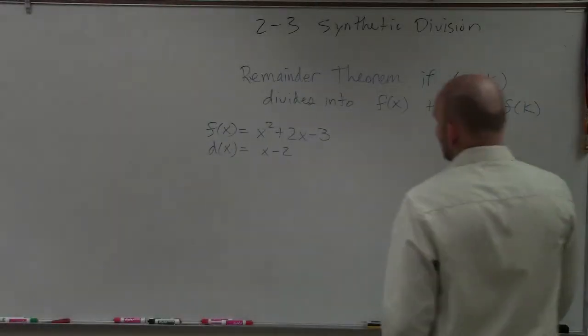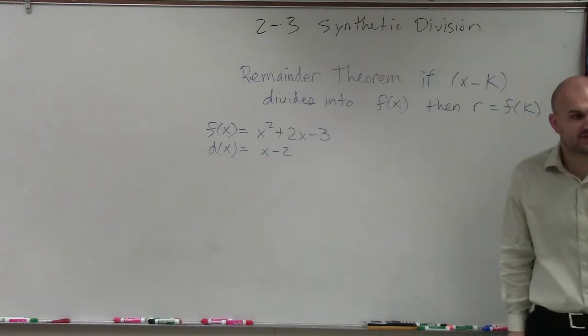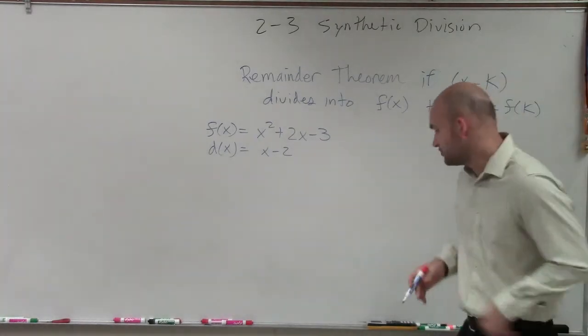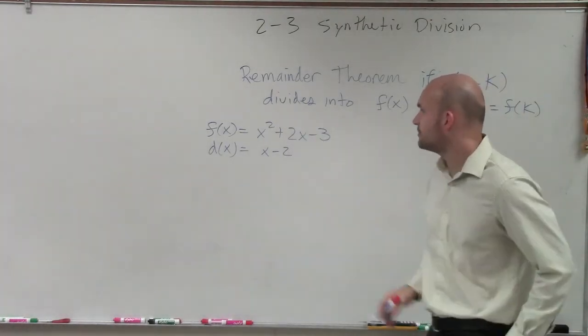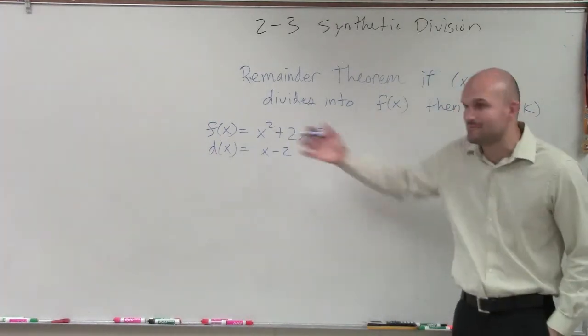x squared plus 2x minus 3, and then I give you a divisor function, which is x minus 2. So pretty much what they're saying is x squared plus 2x minus 3 divided by x minus 2.